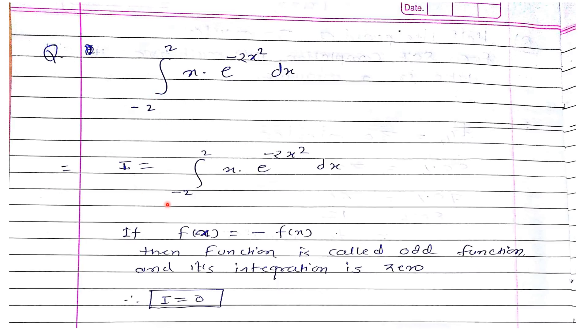If it is minus a to a f of x dx, if the function is even, then its value is 2 times the integration from 0 to a of f of x dx. And if the function is odd, then its value is 0.